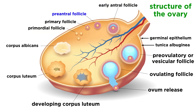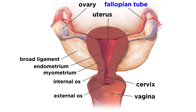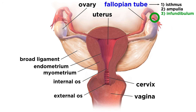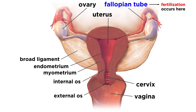When a primordial follicle matures, it becomes a vesicular follicle, with a cavity called an antrum. This follicle will then bulge out of the surface of the ovary, allowing it to eject the oocyte, and this event is called ovulation. The oocyte will then enter the uterine tubes, or fallopian tubes, which have sections called the isthmus, ampulla, and infundibulum, which bears projections called fimbriae. Fertilization will occur at some point along the fallopian tubes, which end at the uterus, also known as the womb. This receives the fertilized egg, retains it in the uterine wall, and nourishes it through fetal development.